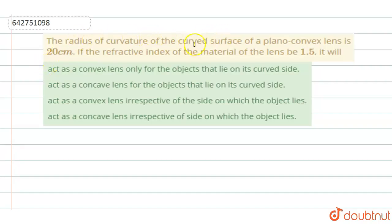The radius of curvature of the curved surface of a plano-convex lens is 20 cm. If the refractive index of the material of the lens is 1.5, it will...